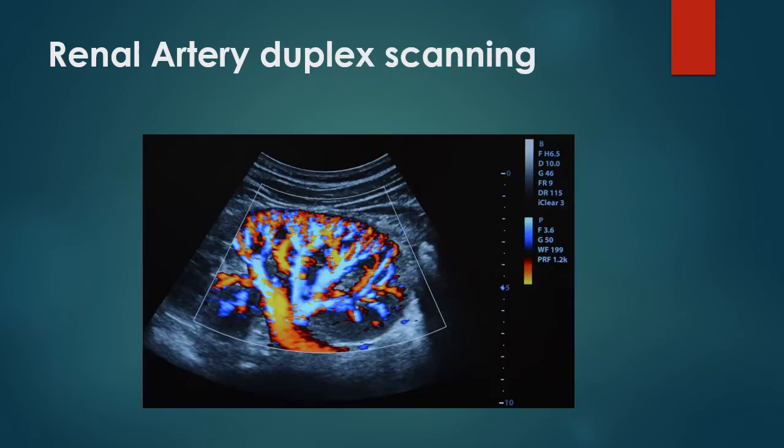Here is a beautiful image of the renal artery duplex. You can see the main renal artery, the segmental artery, the arcuate, and the interlobar artery within this kidney.